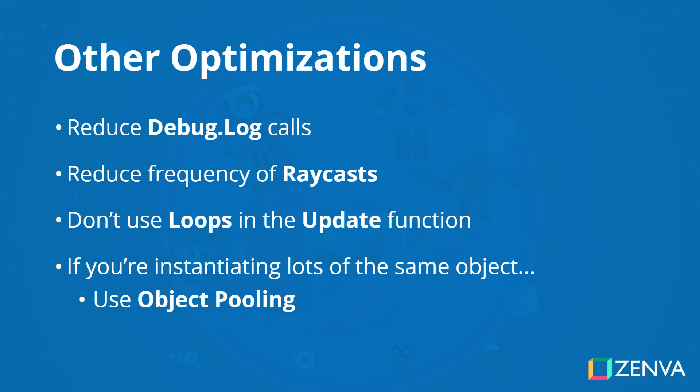In Update functions, try to avoid using loops — avoid looping through stuff every single frame, as it has to loop through every single element in that array however many times you're calling the loop in Update. Also, if you're instantiating a lot of objects that are the same and they're being destroyed, such as bullets or particle effects, you can implement object pooling. When an object is needed, instead of instantiating it, you take it from a pool of pre-created objects. Instead of destroying them, you just disable them, and when you want a new one, the pool checks for an available one, re-enables it, or creates a new one if none are available.